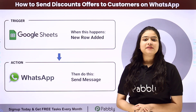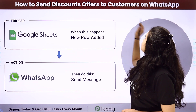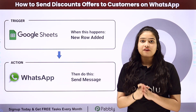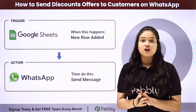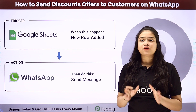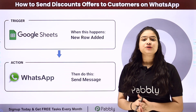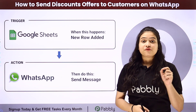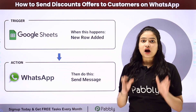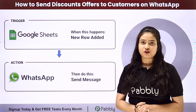Hello everyone, welcome back to Pabbly Connect. In this video, we are going to learn how to send discount offers to customers on WhatsApp. Suppose I have a Google Sheets with data of all my customers along with their contact details, and I want to send Christmas offers to each of these customers on WhatsApp automatically. We will integrate both these applications without any coding or programming skills, using the automation software Pabbly Connect.